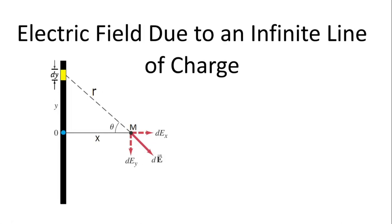Welcome to physics class. Today we are going to talk about electric field due to the infinite line of charge. What we mean by infinite line of charge is that when we have a wire and this wire is too long compared to the distance where we calculate the electric field. In this case, we have the distance X, and this X is too short compared to the length of the wire.